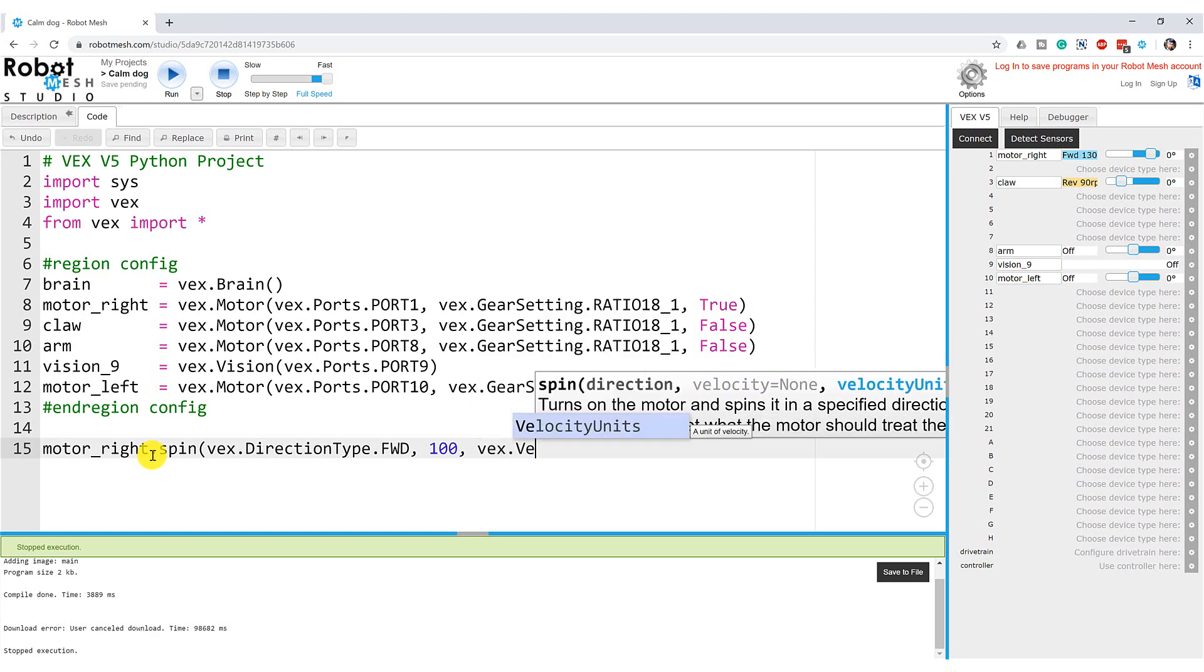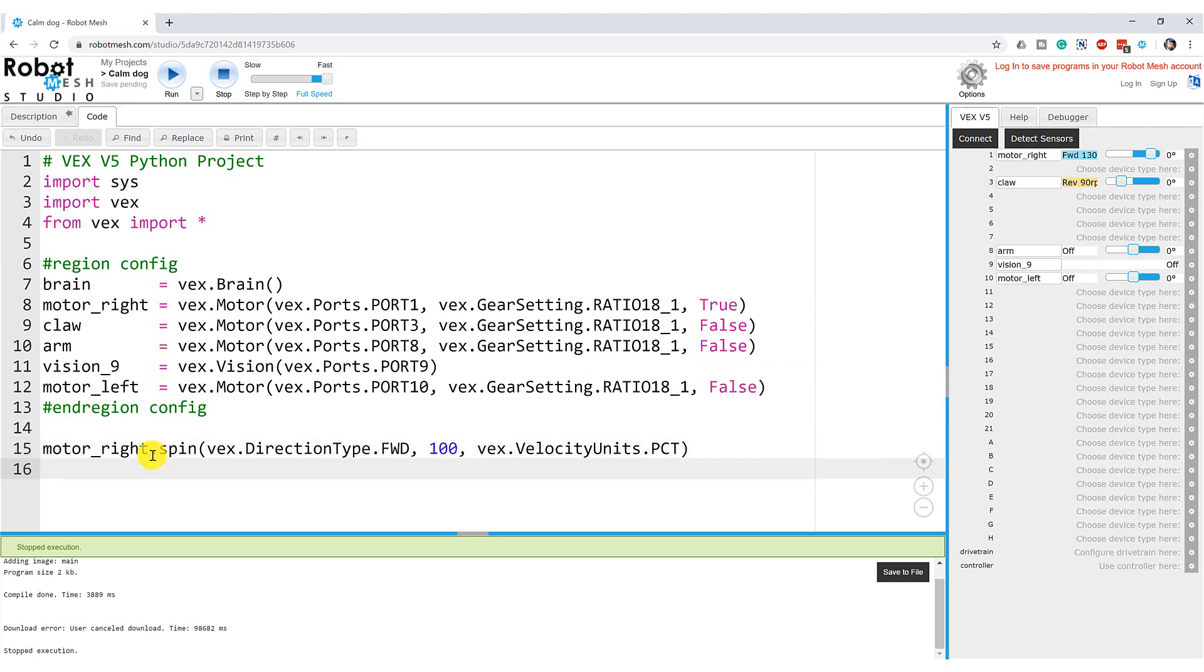So let's go vex.velocityunits.pct for percentage power and we'll do this for 10 seconds. Let's run our program and see what happens.